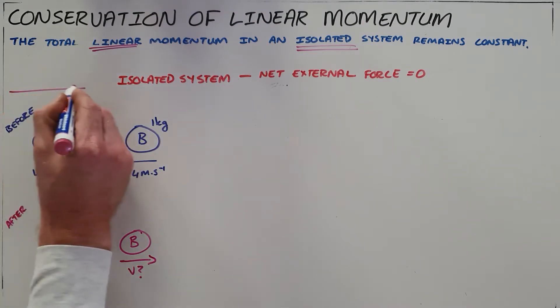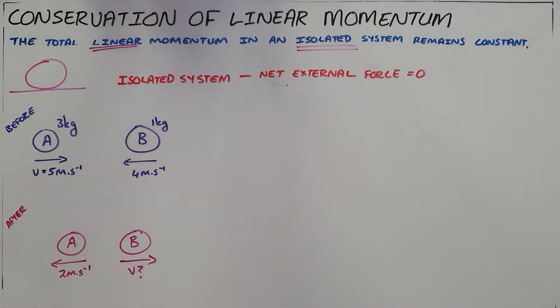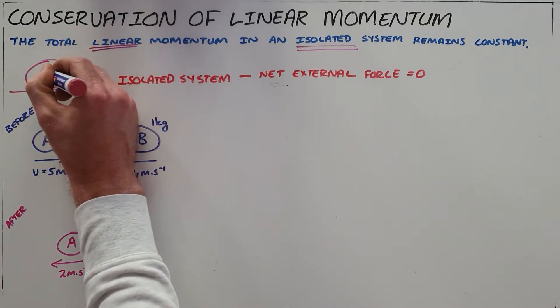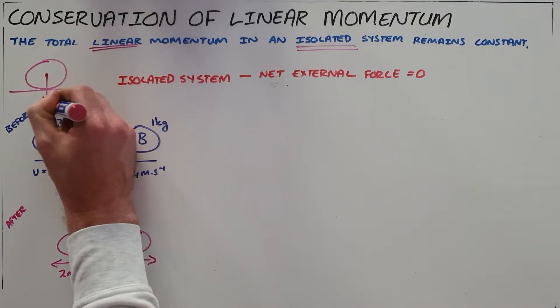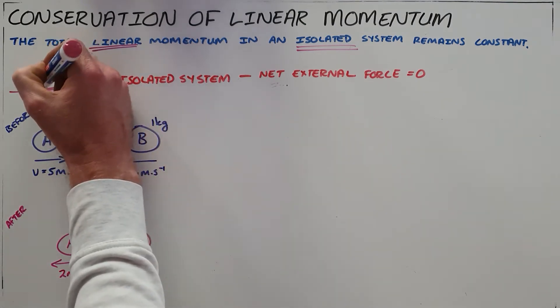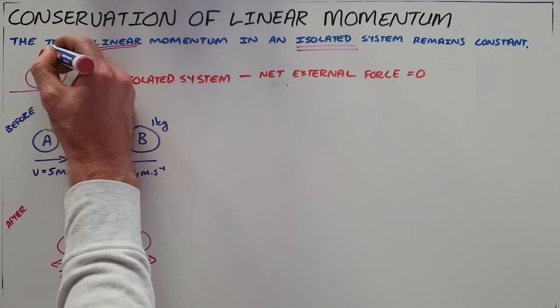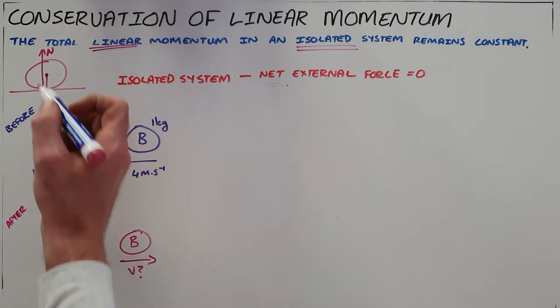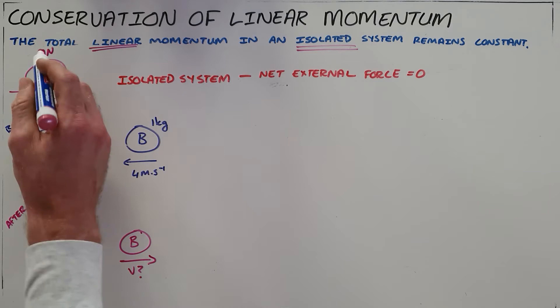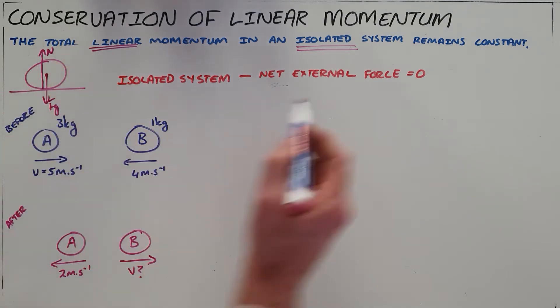For an object at rest on a surface, we know that there is a force of gravity pulling that object downward. That is an external force, a force outside of the system, but there is also a normal force essentially pushing this object upward. As a result, the net force from those two external forces is zero.